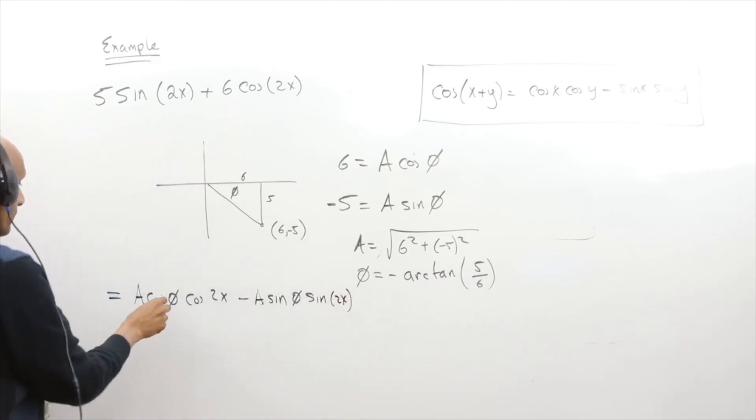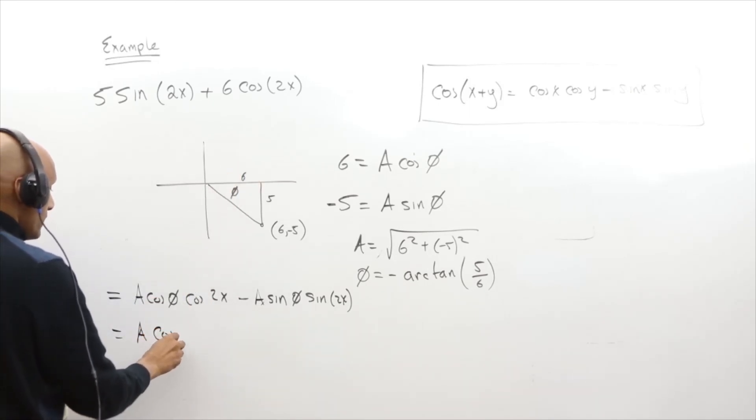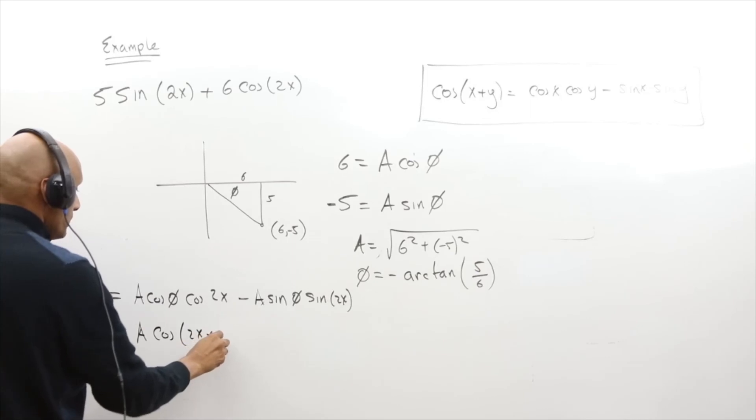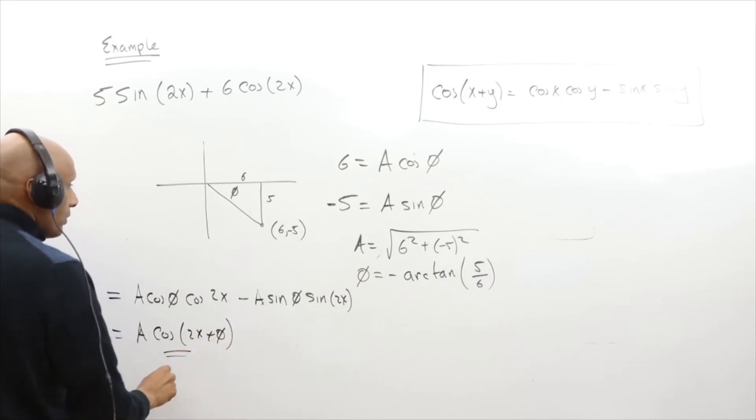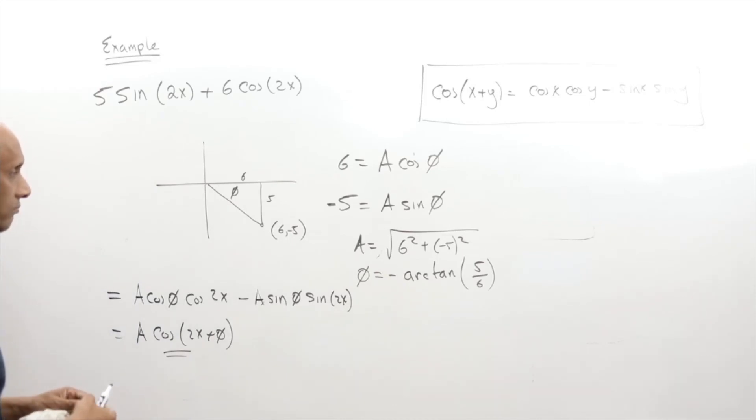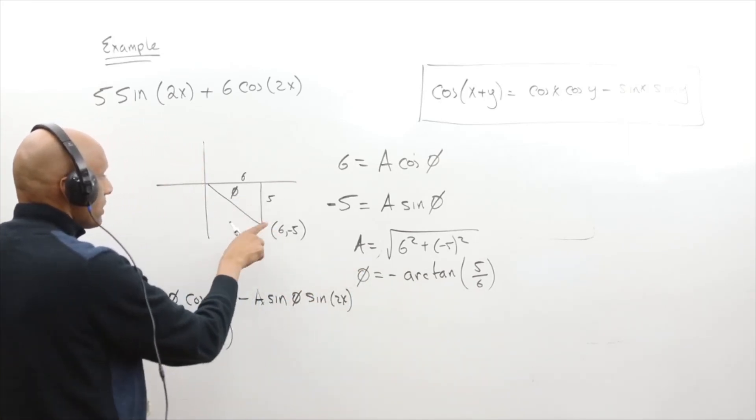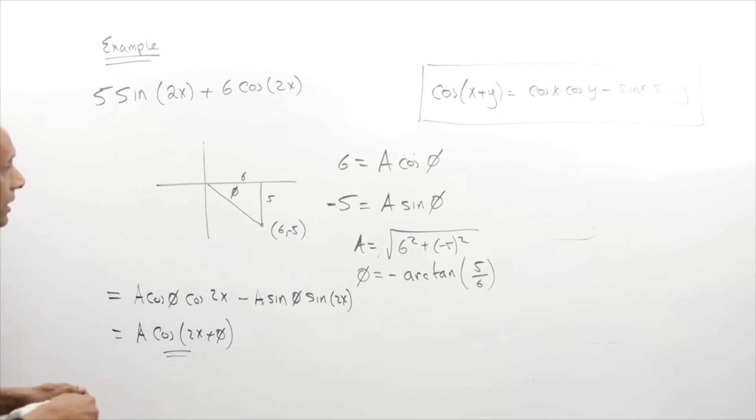And if you kind of look at this carefully, factor out the A, we'll actually get this to be a double angle formula. So this is cosine of 2x plus phi, where A is equal to the square root of 6 squared plus negative 5 squared, and the theta is negative because we're actually working in quadrant number four. It doesn't look like it, but it's because I'm trying to match up the cosine and sine equations.